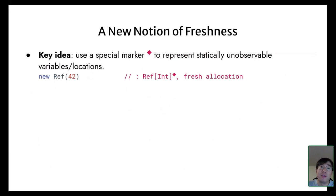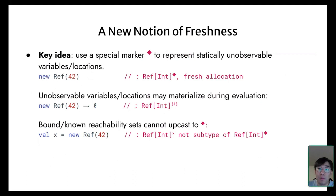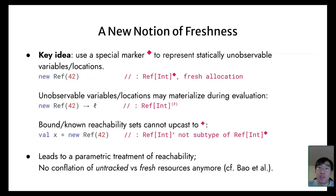The new idea in this work is that instead of using either the top or bottom in the reachability hierarchy, we designate a special marker for freshness, indicating practically unobservable variables or locations. In our design, we use the diamond notation for this freshness marker. These unobservable variables or locations may materialize during evaluation. For example, a new-ref expression becomes a fresh location value after one reduction step, and the typing of the location grows with that new location. A fresh expression can be bound to a known variable, but importantly bound variable qualifiers are not subtypes of freshness—otherwise we would lose tracking of these resources. In this way, we can have a parametric treatment of reachability without conflating untracked resources and fresh resources.